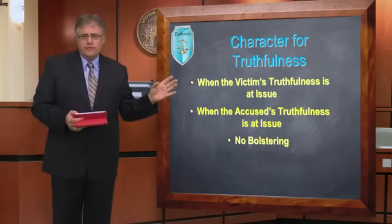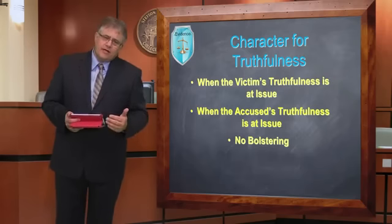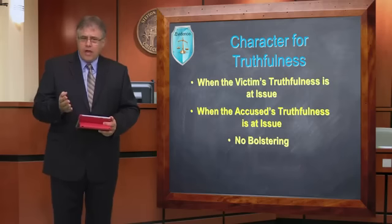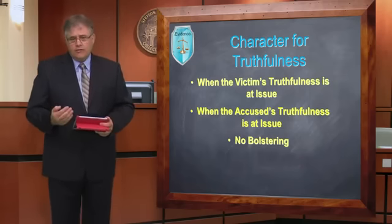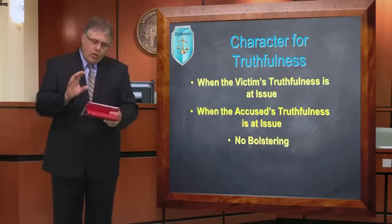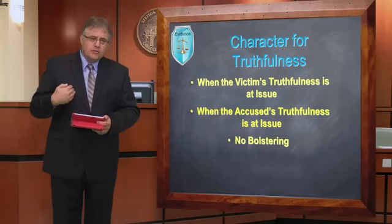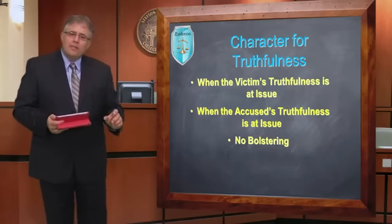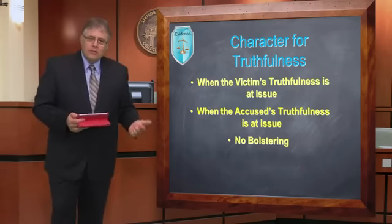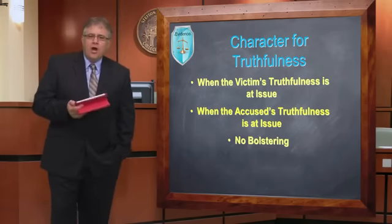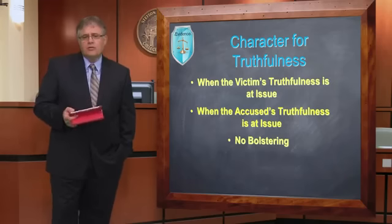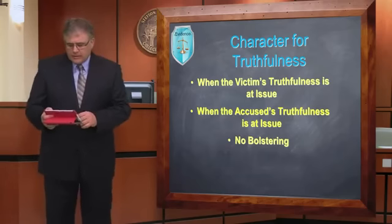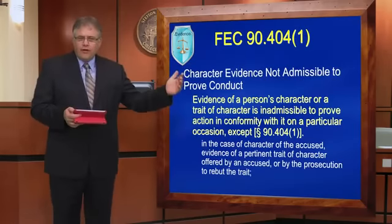Remember, when dealing with character for truthfulness: every witness who takes the stand has placed their character for truthfulness at issue. Character for truthfulness can come up through a 404(A) theory of relevancy or a 608 theory of relevancy. In either case, when I attack the character for truthfulness, I'm still subject to a 403 analysis. And what I cannot do is offer evidence that a person is truthful prior to their character for truthfulness being attacked — all witnesses are presumed to tell the truth until such time as we know they're not.